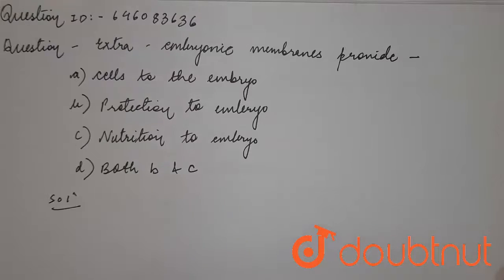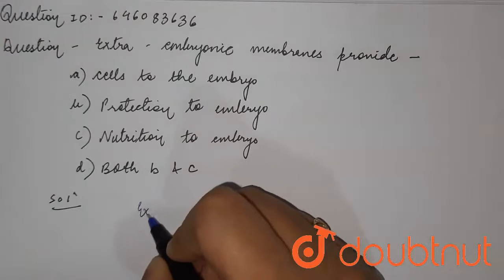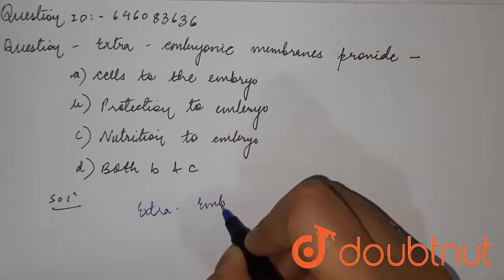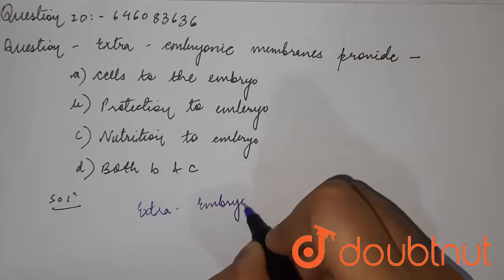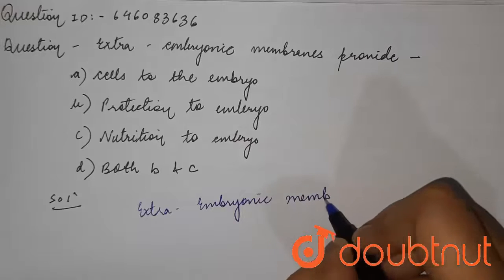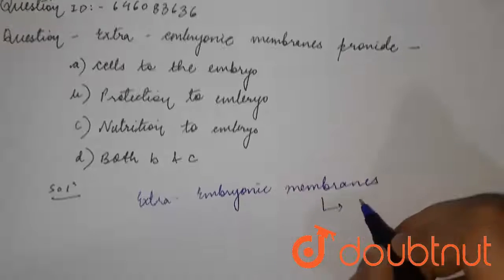Hello students. We have a question: extra embryonic membranes provide — options are: A) cells to the embryo, B) protection to the embryo, C) nutrition to the embryo, and D) both B and C.